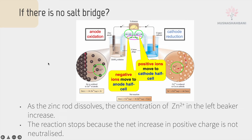If there is no salt bridge, there will be no movement or neutralization of ions in both half cells. As the zinc dissolves, the concentration of Zn²⁺ in the left beaker increases. If there is excess positive ion in the left cell, the reaction will stop because the net increase in positive charge is not neutralized. So without a salt bridge, there is no neutralization and the reaction stops.